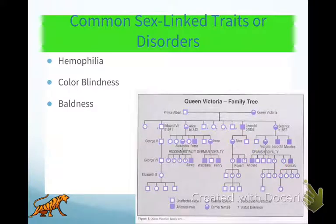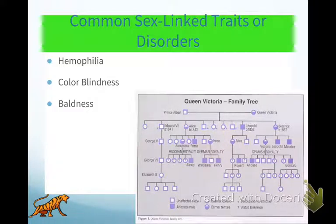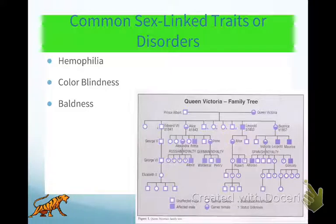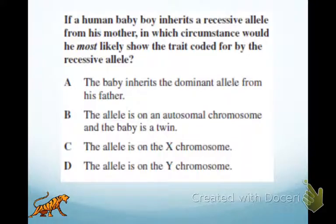Common sex-linked traits: hemophilia, colorblindness, and baldness. There's Queen Victoria's family tree — she was a carrier at the top and married Prince Albert. One of their children, Leopold, had hemophilia. You can see how it played out throughout the royal family. Their children married into royal families all over Europe and influenced genetic trees across the continent.